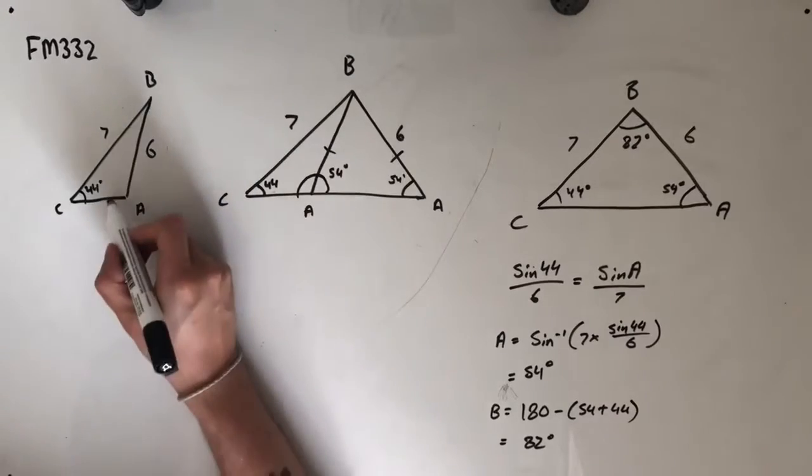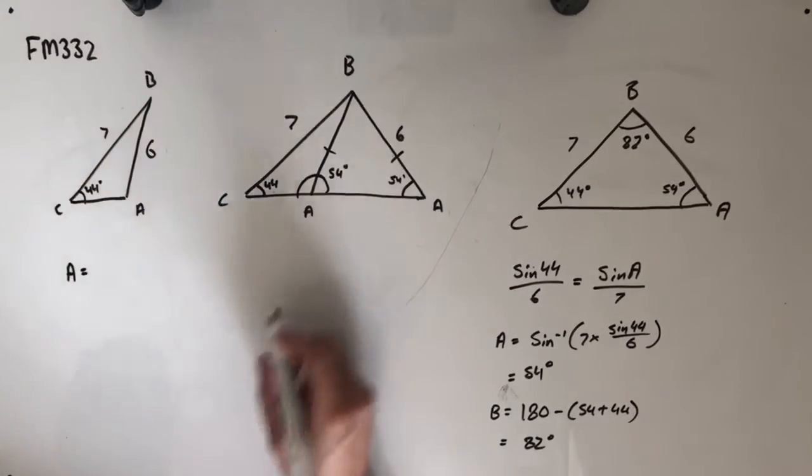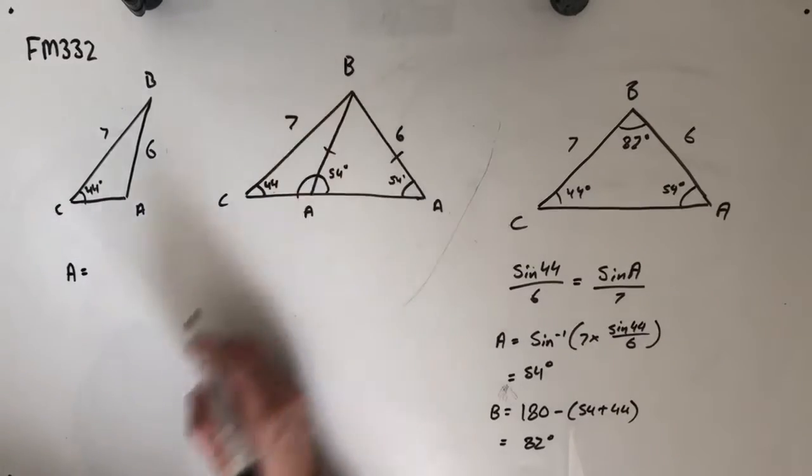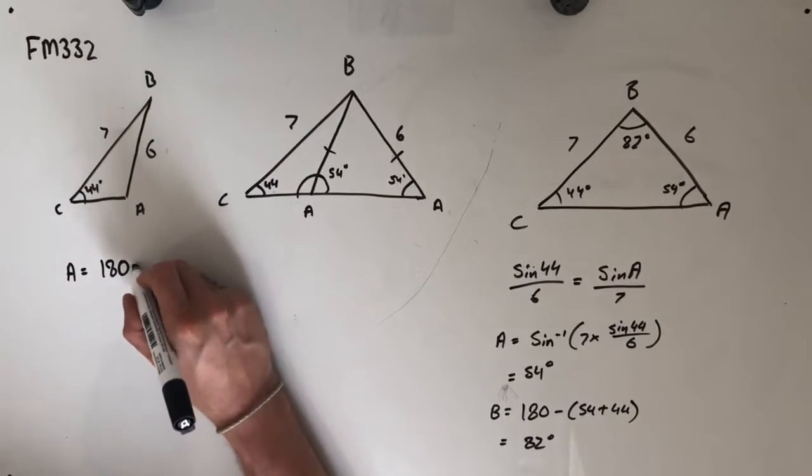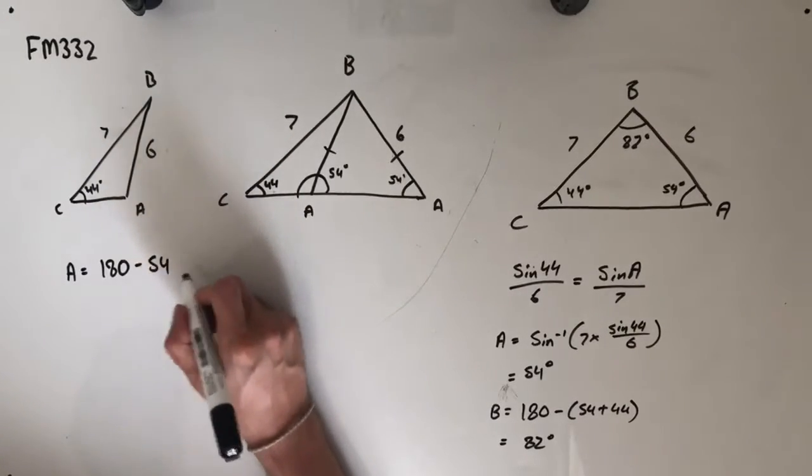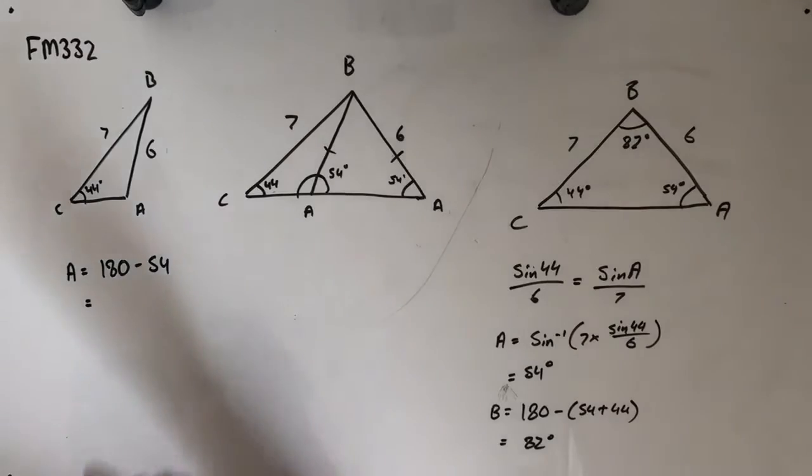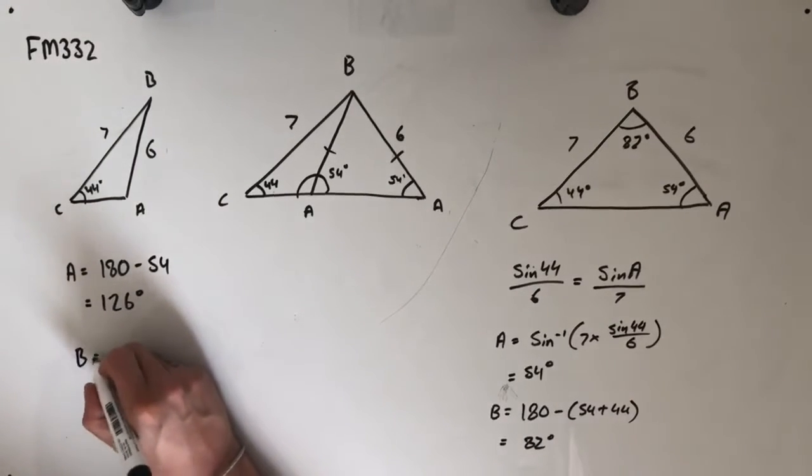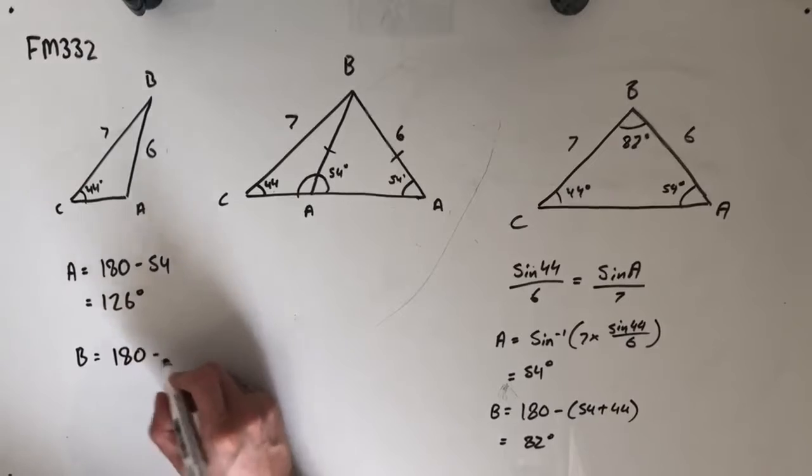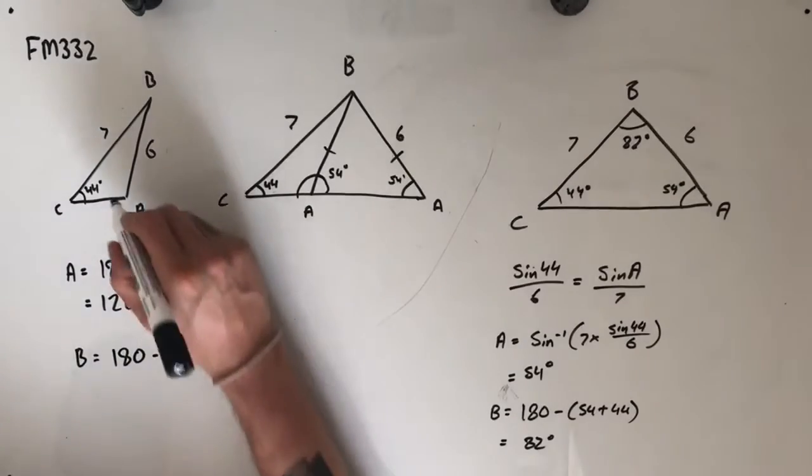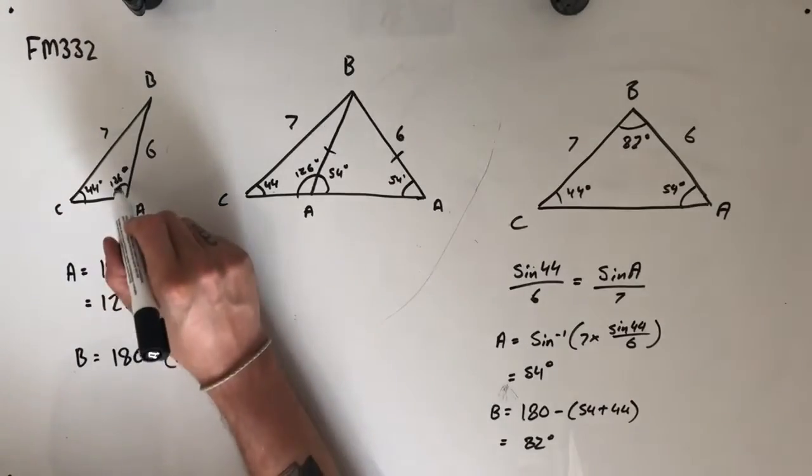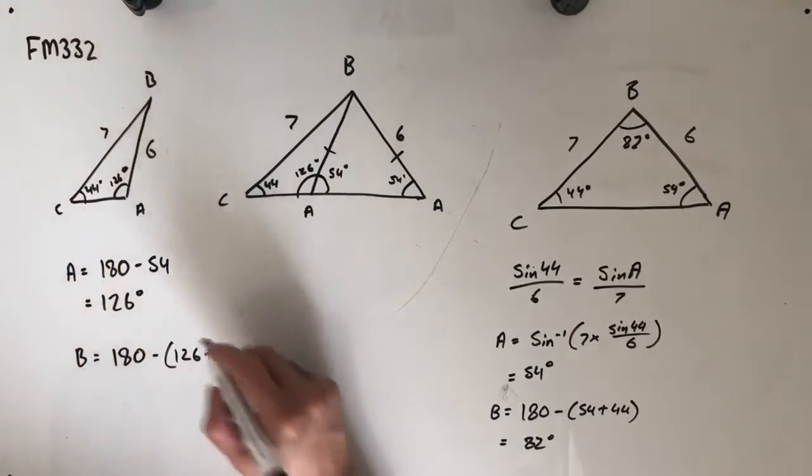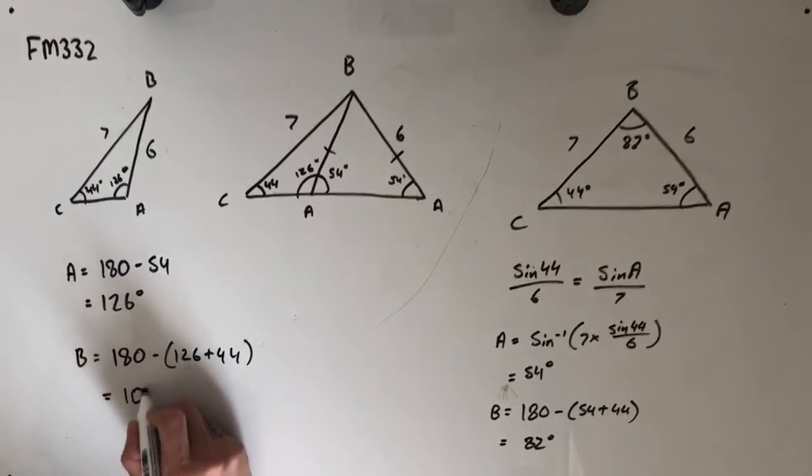And this angle, our new angle A over in this question, is going to be equal to 180 degrees minus this 54 degrees. So, we can find our other potential angles by looking at A being equal to 180 minus the 54 value that we got for angle A earlier. So, A could also be 126 degrees. Which means that B could also be 180 minus 126 plus 44. So, since we've got 126 degrees in here, which is the same as 126 degrees there, we can now use 180 degrees, take away these two, and we should end up with an answer of 10 degrees.